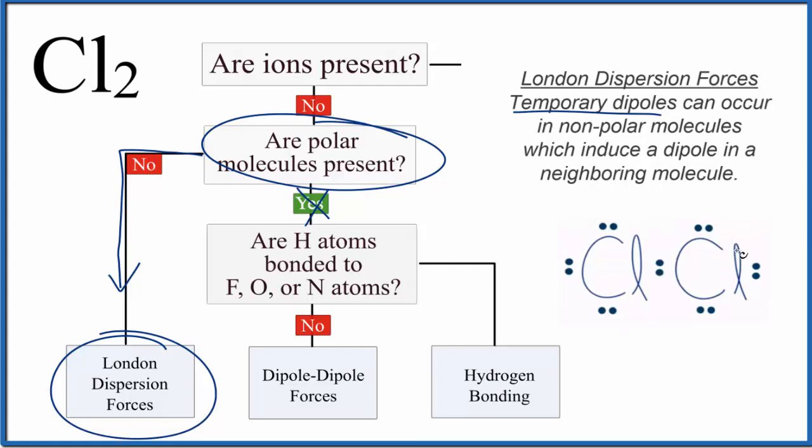For chlorine gas Cl2, the attraction isn't really big. It's normally a gas because that attraction isn't huge, but it's enough if you cooled it down you could make chlorine gas into a liquid fairly easily.